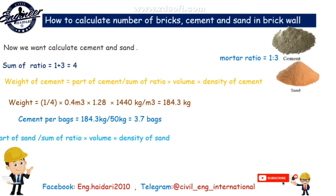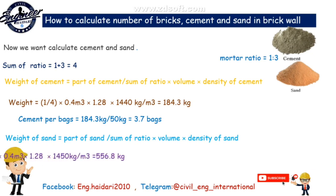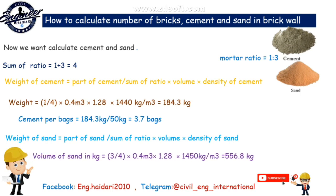Weight of sand equals part of sand divided by sum of ratio, multiplied by volume, multiplied by density of sand. Volume of sand equals 3 divided by 4, multiplied by 0.4 cubic meter, multiplied by 1.28, multiplied by 1450 kilograms per cubic meter, equals 556.8 kilograms.